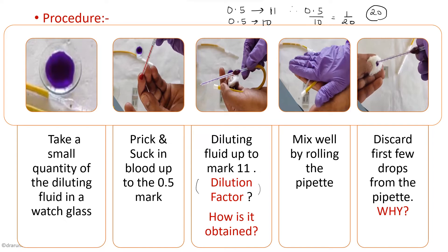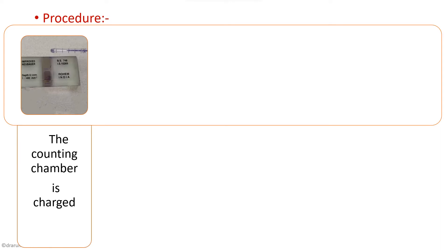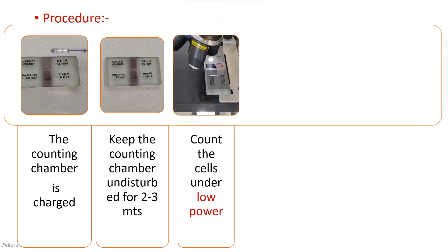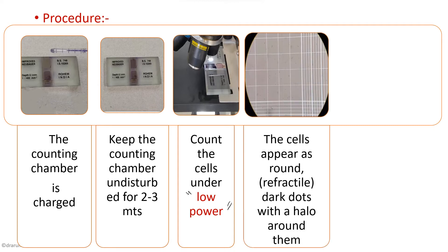Why should you discard the first few drops from the pipette? Because it contains only the diluting fluid. The next step is to charge the counting chamber. Questions can be asked regarding the counting chamber — what is the name of the counting chamber? It is the improved Neubauer double counting chamber. We keep the counting chamber undisturbed for 2 to 3 minutes for the cells to settle down, and then count the cells under low power. For WBC counting, we use low power, and the cells will appear as round dark dots with a halo around them — they act as refractile bodies.